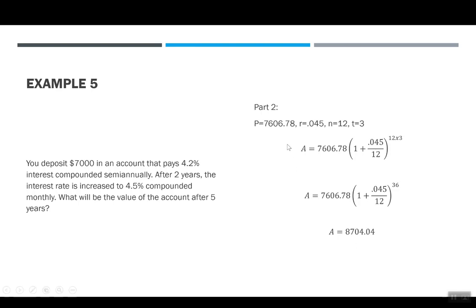In our next piece, our P is $7,606.78. So we don't go back to the $7,000, we go to where were we in two years. But our interest rate changed to 4.5%, our compounding changed to 12, and there are three years left of this investment. So I put these pieces into our formula. 12 times 3, you can see I made that 36. So this is what I want to put in my calculator. And again, I encourage you, go ahead and try it. Make sure you're also getting $8,704.04 as your total.